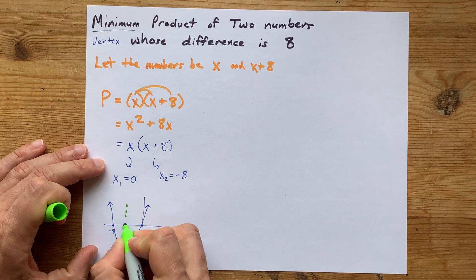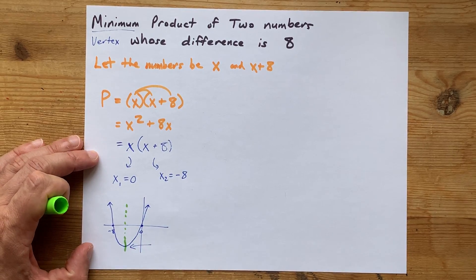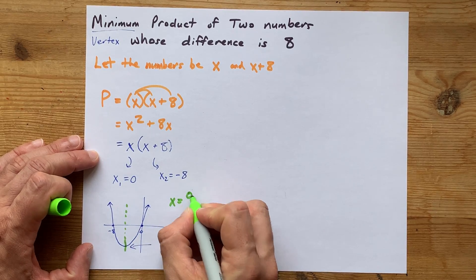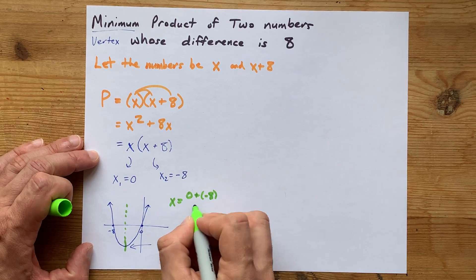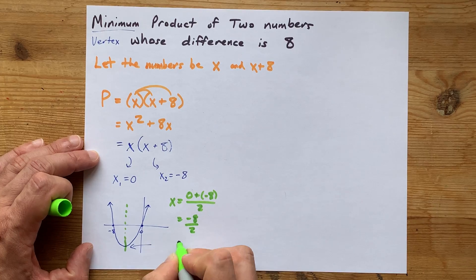Well, it occurs directly in between those two numbers, 0 and negative 8. If you don't know what number comes in between, don't worry, you can just take the two numbers, 0 and negative 8, add them together and divide by 2. You get negative 8 divided by 2.